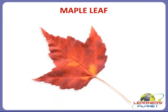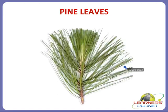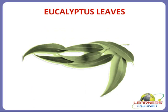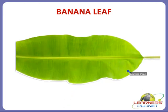Let's study about different types of leaves of different kinds of plants. For example, maple leaf, then neem leaves, tulsi leaves, pine leaves, gulmohar leaves — you can see it is so beautiful — then eucalyptus leaves. You can see the shape of these leaves, they are very different. Then banyan leaf and banana leaf. All these are different leaves because they are from different plants. So we can say that different plants have different types of leaves, and by looking at its leaves, we can identify the whole plant.